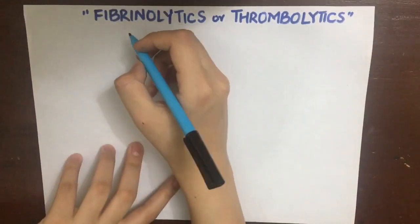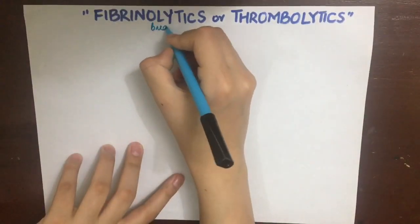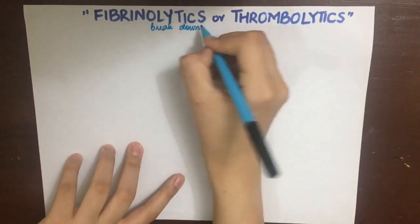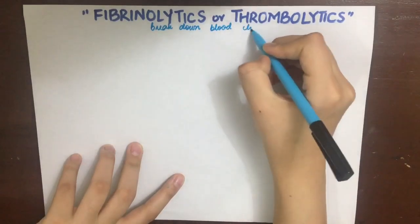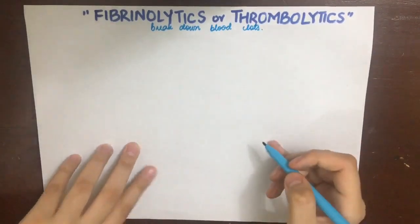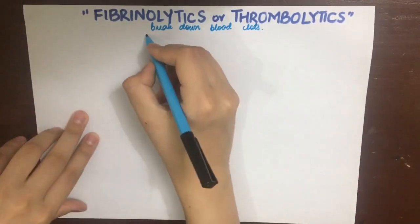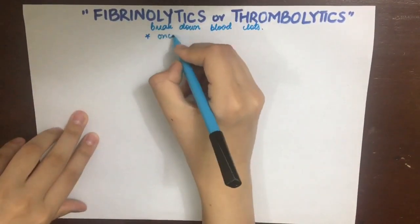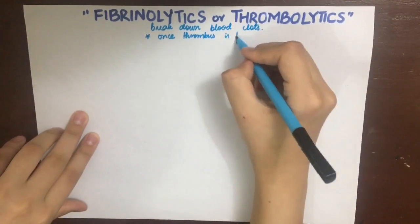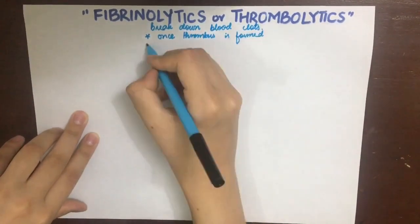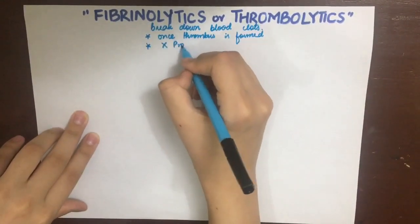Fibrinolytics or thrombolytics are drugs used to break down blood clots or thrombi. Remember that these drugs are used once there is thrombus formation — they are not used prophylactically.